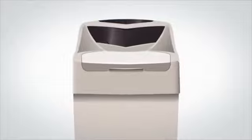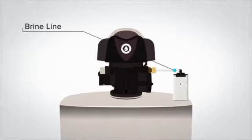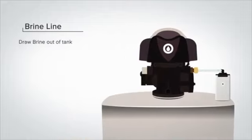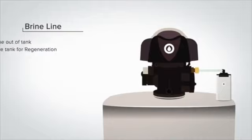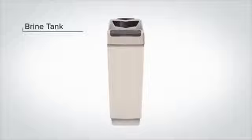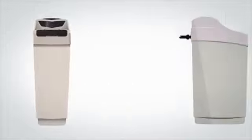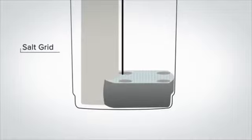Running from the softener control valve down to the brine tank is the brine line. This tube has two functions: it's used to draw the brine out of the brine tank, and it's also used to refill the brine tank for future regeneration. The final component is the brine tank. The brine tank is where salt is added to the system. All Drop brine tanks include a salt grid at the bottom of the tank. The salt grid helps to keep the salt from bridging.